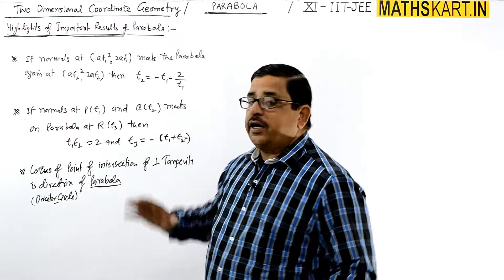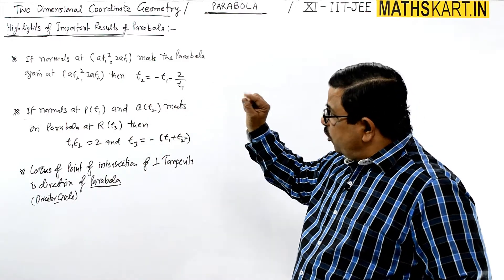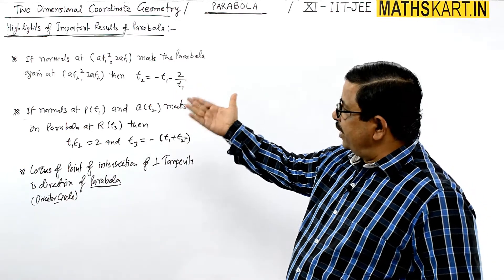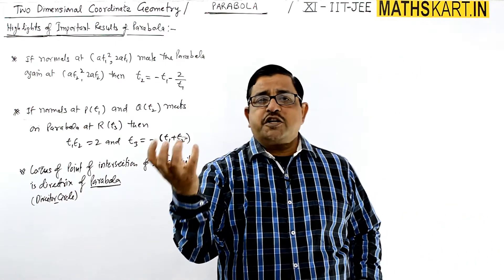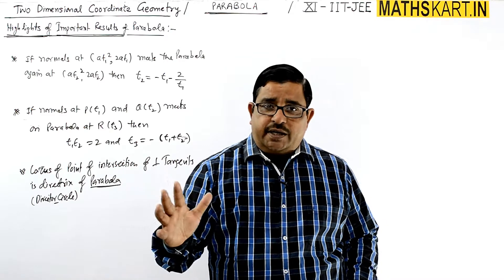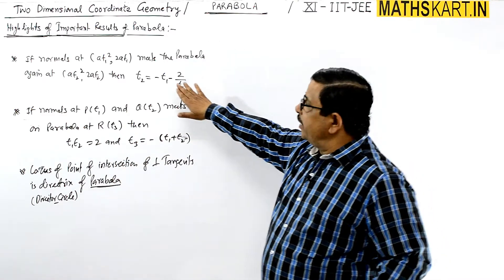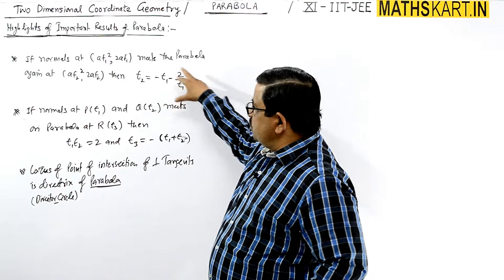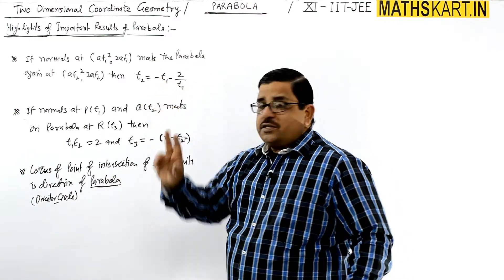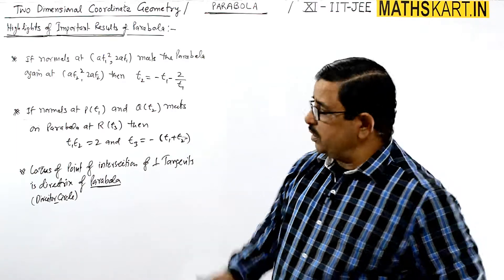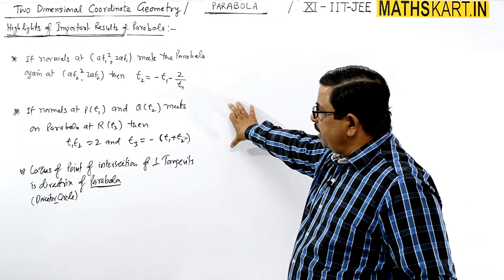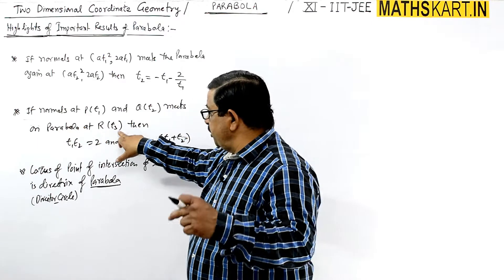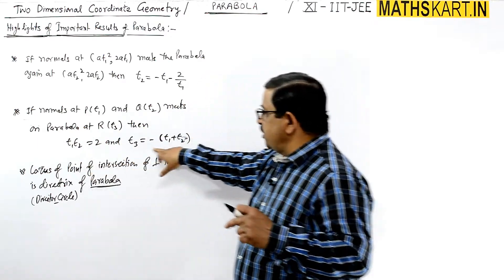Next, three important highlights of the parabola. First property: if the normal at point (at1², 2at1) meets the parabola again at (at2², 2at2), then there is a specific relation between t1 and t2. Second property: if normals at P(t1) and Q(t2) meet on the parabola at R(t3), then there is a relation involving t1, t2, and t3.